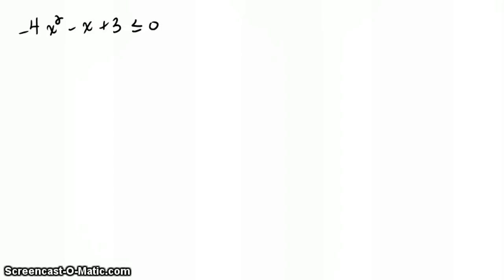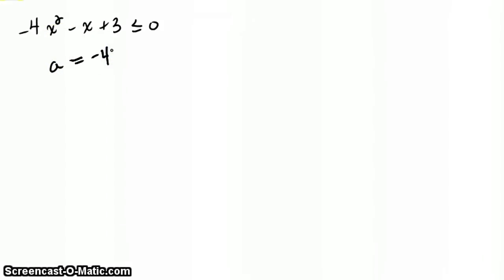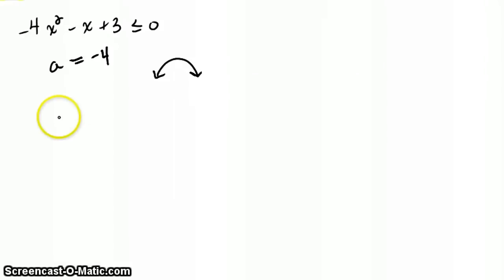Let's try another inequality. This time we have negative 4x squared minus x plus 3 is less than or equal to 0. We've already got everything on the left side, so we don't need to do anything there. What we do need to do is find our direction. Since a is negative 4, our direction is going to be down — we've got a graph that faces down like a frown. Now we need to find our zeros, so we set it equal to 0: negative 4x squared minus x plus 3 equals 0.